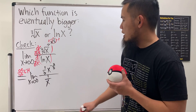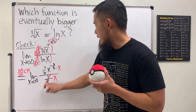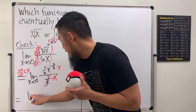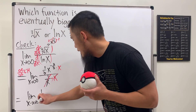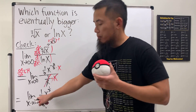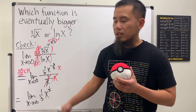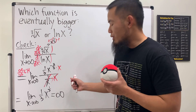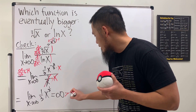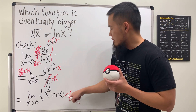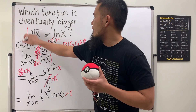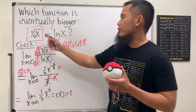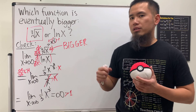Now let's simplify by multiplying the top and bottom by x. That cancels with the negative two-thirds exponent, leaving us with the limit as x approaches infinity of one-third times x to the one-third. Plugging in infinity: infinity to the one-third power is still infinity, times one-third is still infinity. This result is infinity, which is greater than one, so the top function — the cube root of x — is the winner. In fact, any radical function, even the 12th root of x, will eventually win; you just have to be patient.